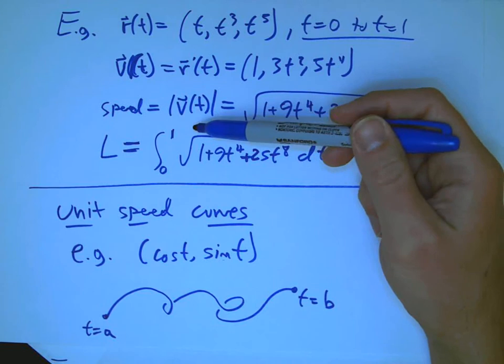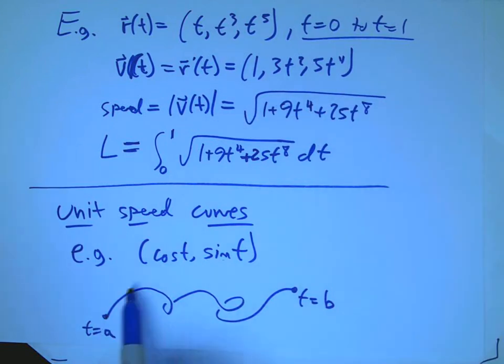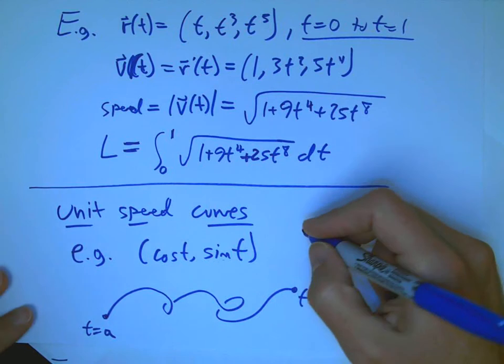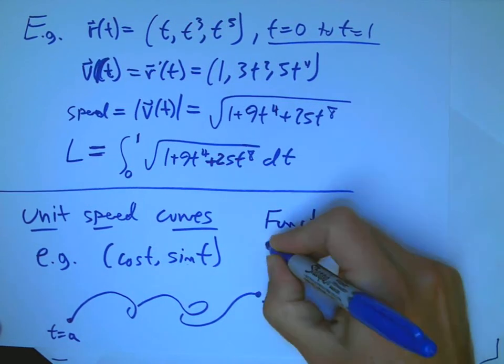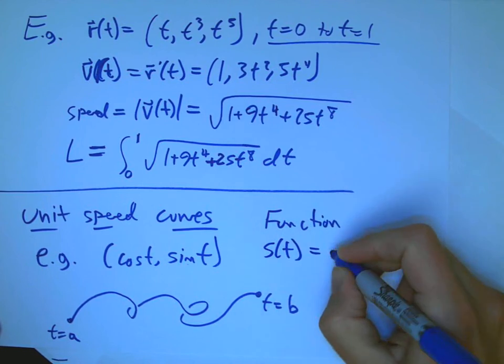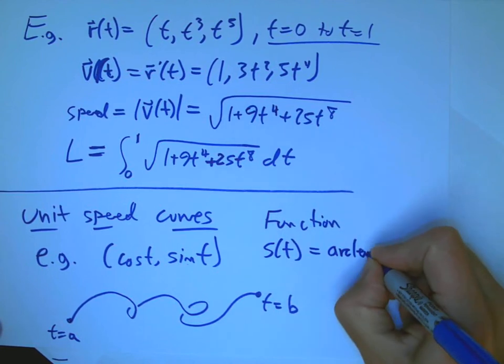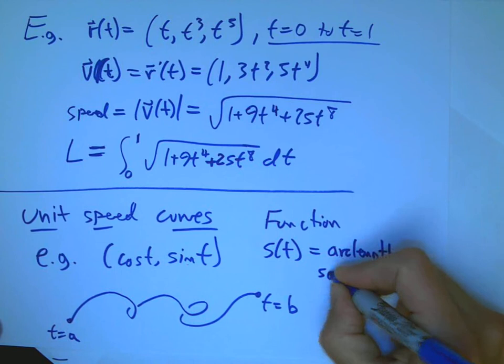And then what I'm going to do is, instead of doing just the arc length, the total arc length, I want to keep track of the arc length as I'm going. And so I want the function, and it's going to be called s(t), which is arc length so far.